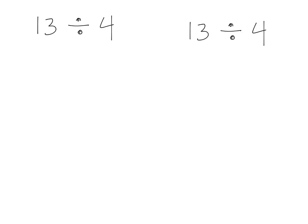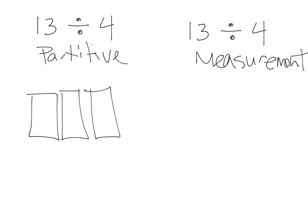So for example, 13 divided by 4. We can model this as partitive and we can model this as measurement. 13 divided by 4 with the partitive means we're going to take 13 and we're going to cut it into four parts. So the idea would be we're going to take 1, 2, 3, 4 parts. And we're going to take those 13 and we're going to sort them evenly into those four parts.